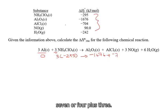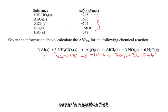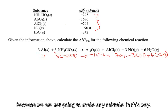And that gives you Al2O3. We have negative 1676. And for AlCl3, it is negative 704 plus 3 NO. So 3 times 90 plus 6 times water. Water is negative 242.